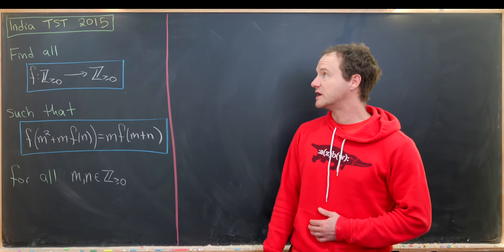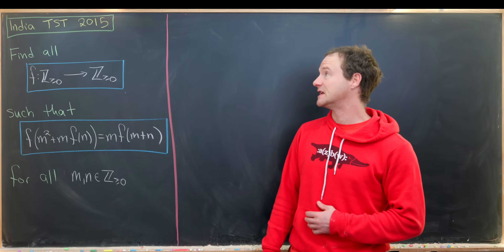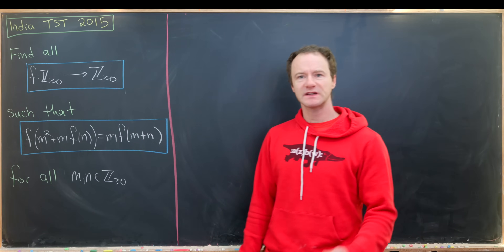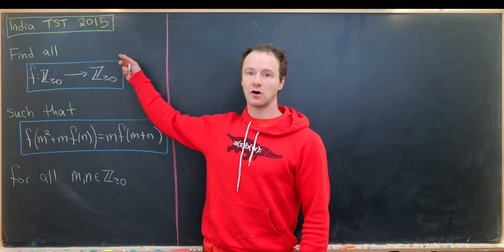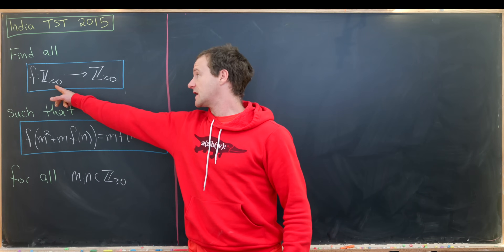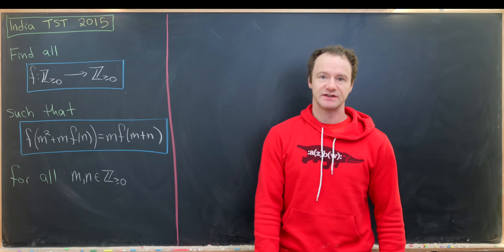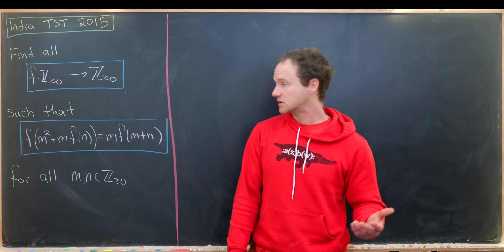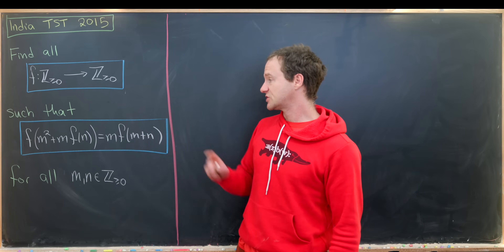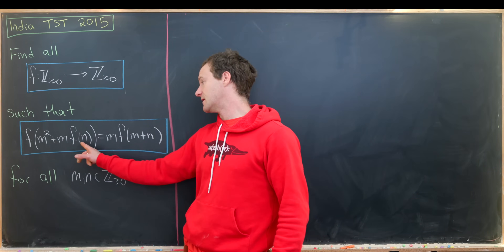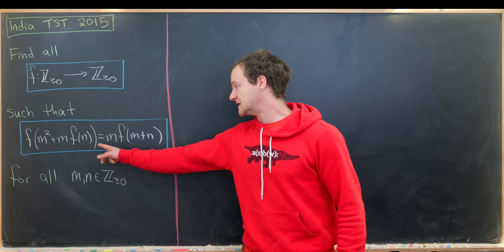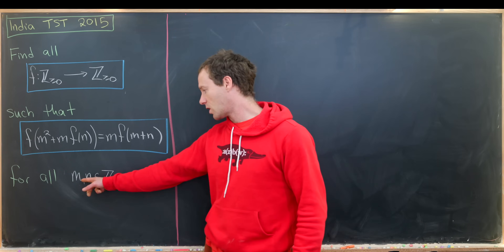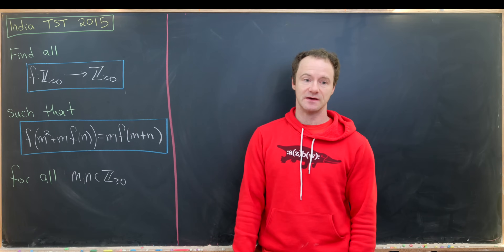Today we're going to solve a nice functional equation from the 2015 India team selection test for the Mathematical Olympiad. Our goal is to find all functions from non-negative integers to non-negative integers such that f(m² + m·f(n)) = m·f(m + n), and this is true for all non-negative integers m and n.